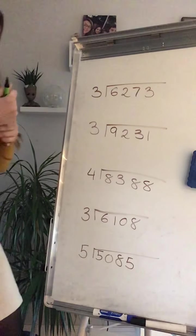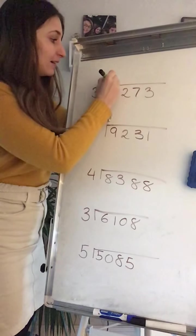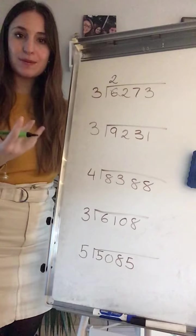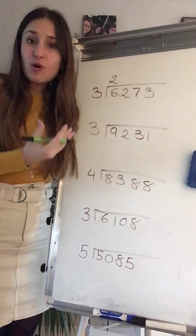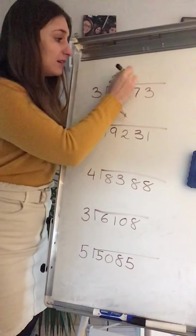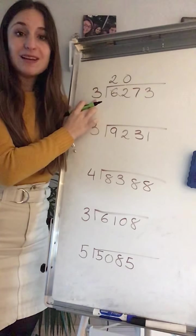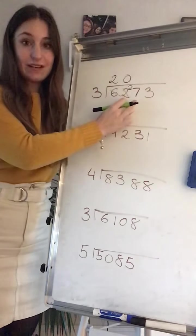So we start with the first one which is 6 divided by 3. 2 times 3 is 6. Now I have 2 divided by 3. Well, 2 is not on my 3 timetable, it's smaller than 3 so I cannot do that, it's 0. 0 times 3 is 0, and we carry that 2 to make 27.